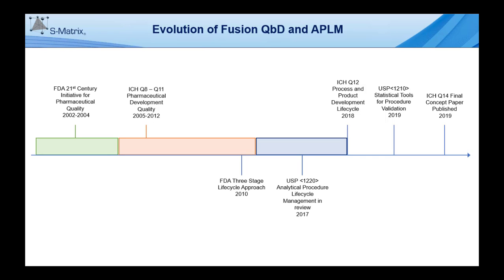S-Matrix actually released its first QBD software program for Windows in the mid-1990s. In 2002, S-Matrix began an initiative sponsored by a major international pharma company to automate LC robustness testing. This project culminated with the release of a commercial product in 2004, providing LC method development automation with integrated design of experiments methodology.